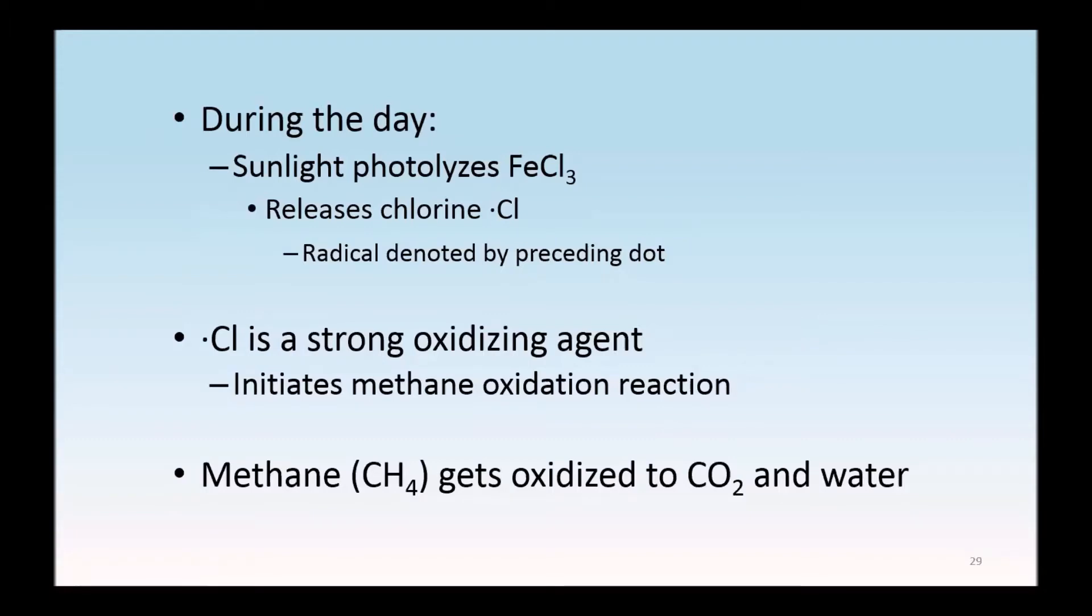What it does is sunlight photolyzes iron chloride to produce a chlorine radical that is a single atom of chlorine, denoted here as .Cl. Chlorine radicals are a rapid oxidizing agent, 16 times faster than OH radicals on methane, and they initiate methane oxidation to CO2 and water.